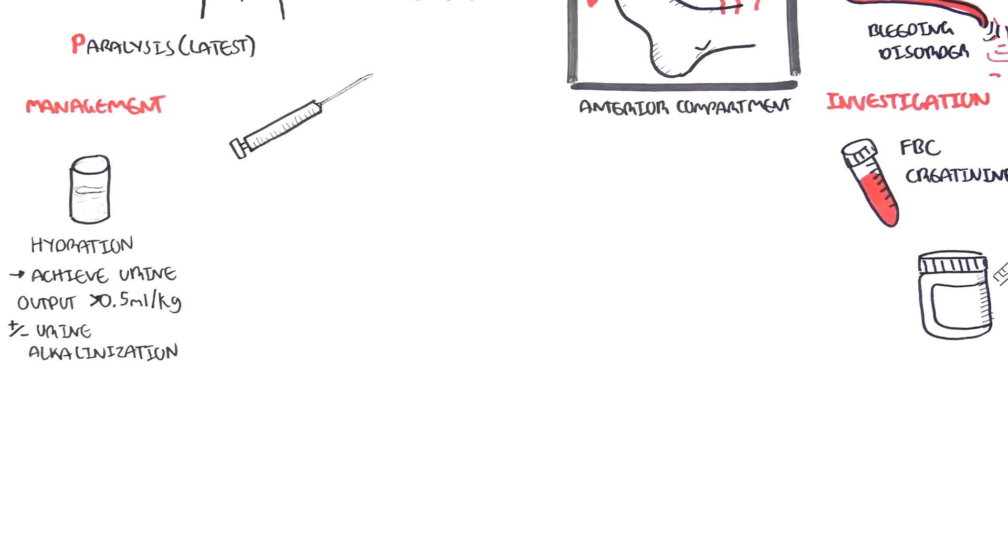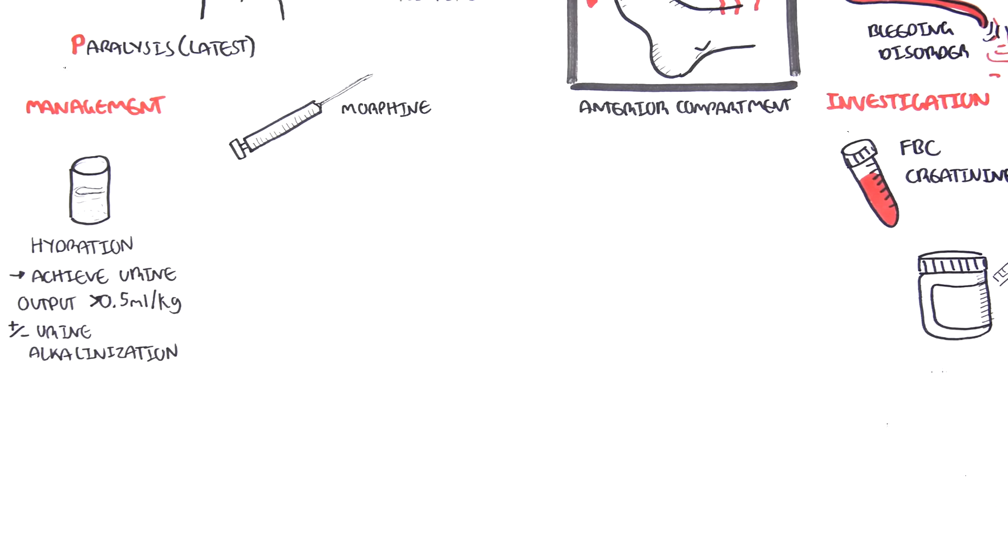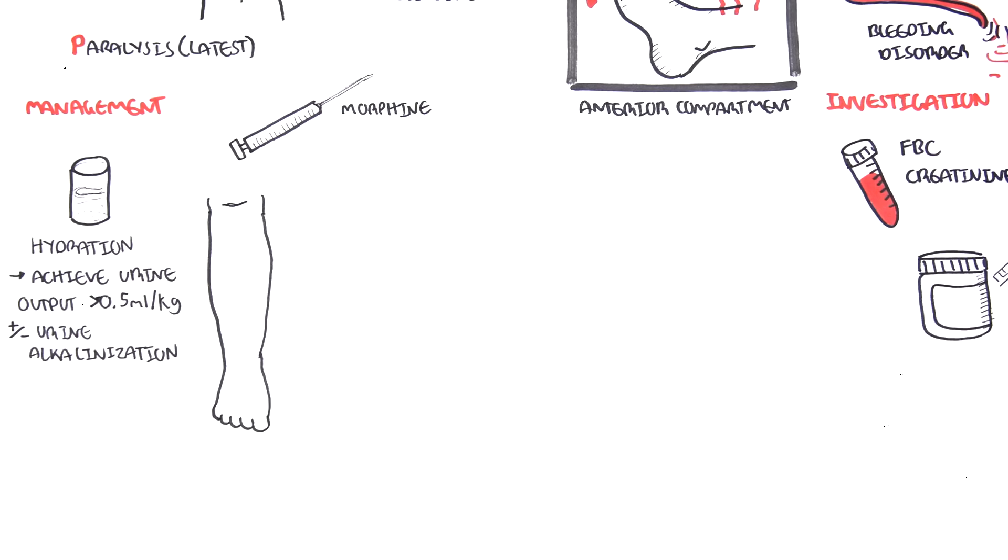The problem is that elevated creatinine kinase and myoglobin is actually toxic to the nephron, to the kidneys, and so you want to flush it out. Morphine is also important for pain relief. But the main form of treatment is surgery, which is a fasciotomy.